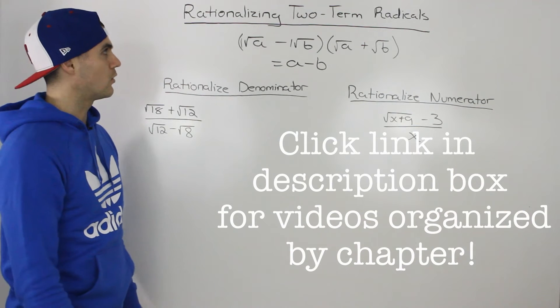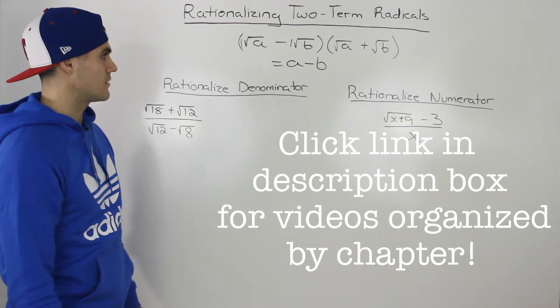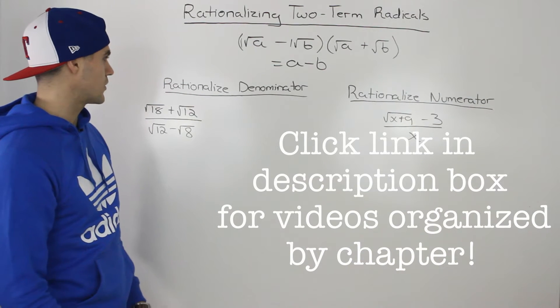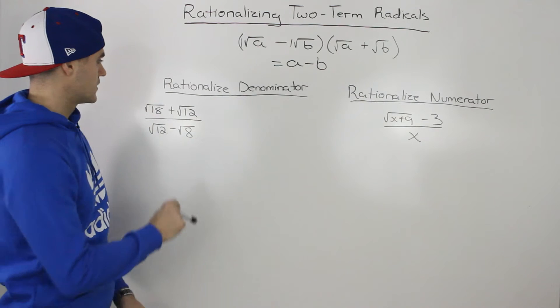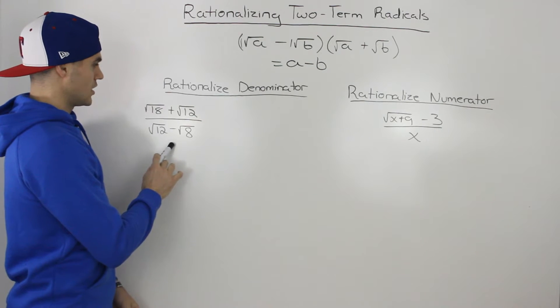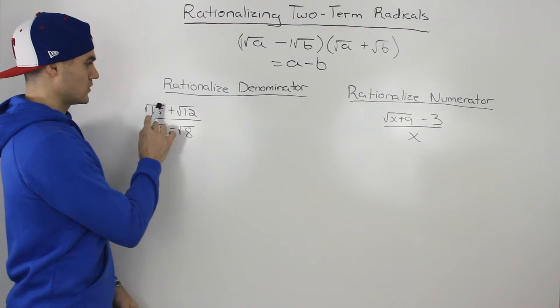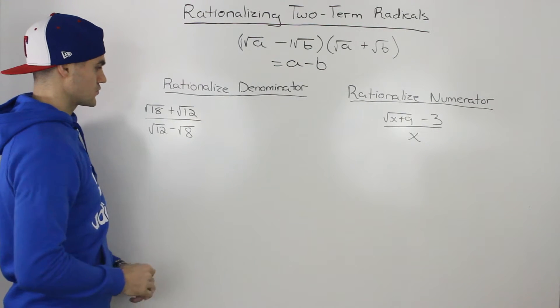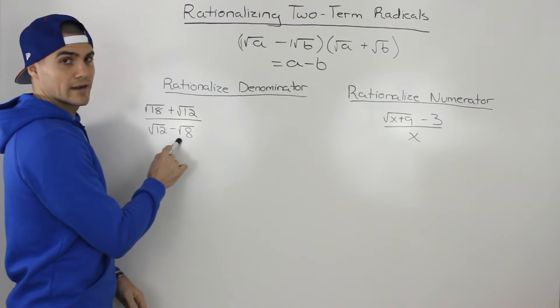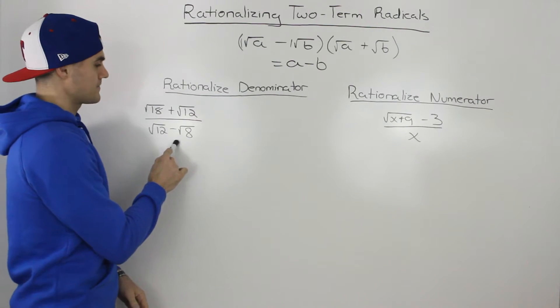In this video, we're going to go over some examples for rationalizing a two-term radical. So the first one, we have to rationalize the denominator of root 18 plus root 12 over root 12 minus root 8.